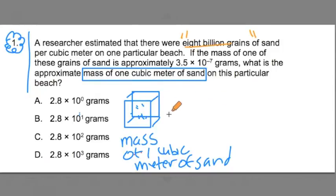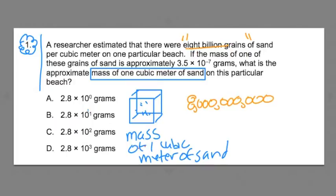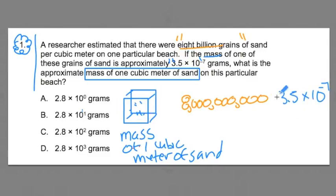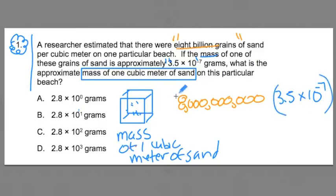So in this cubic meter there's 8 billion grains of sand, that's an 8 plus 9 zeros. And then we're also told that each one of those grains of sand has a mass of 3.5 times 10 to the negative 7th. So this is the mass of one of those grains of sand. And this is all the grains of sand that are in that box. And we want to find the total mass of one cubic meter of sand.